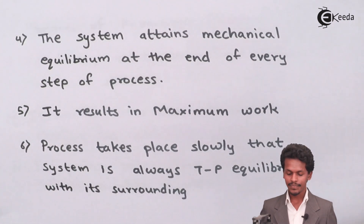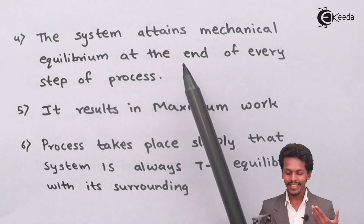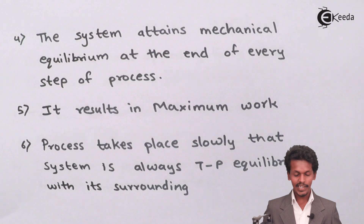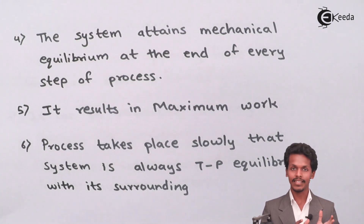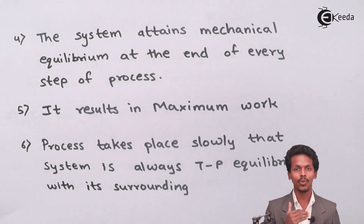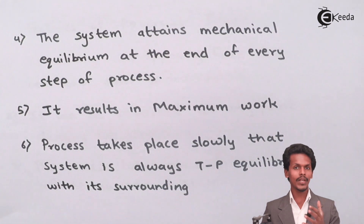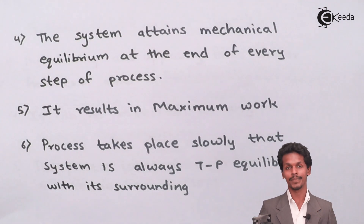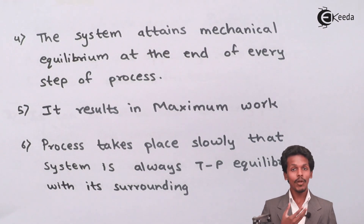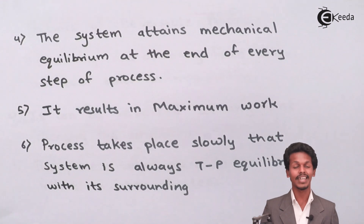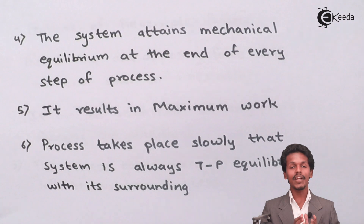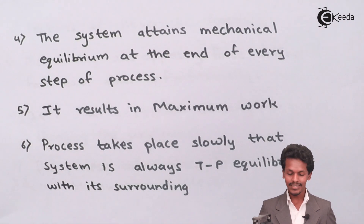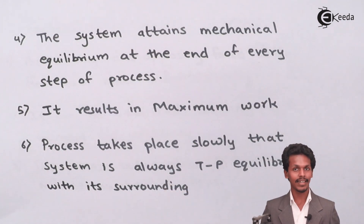Another feature is that the system attains mechanical equilibrium at the end of every step of the process. Consider a gas enclosed in a cylinder with a frictionless piston. If the gas expands rapidly, we observe large changes in state functions like pressure, volume, and temperature — from P1, V1, T1 suddenly to P2, V2, T2. But in a reversible process, the change is infinitesimal, very small, so the state functions do not change significantly. That is why mechanical equilibrium is maintained throughout the process.